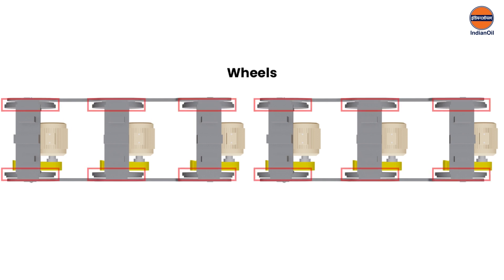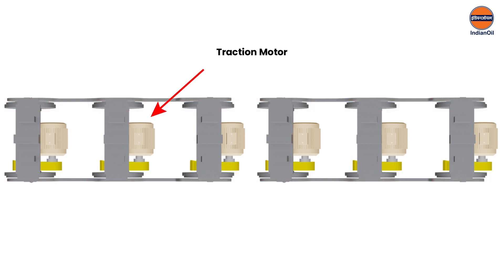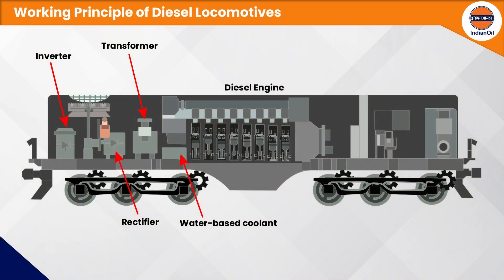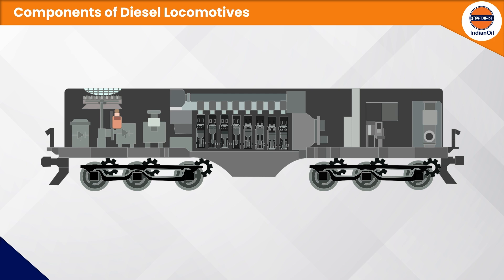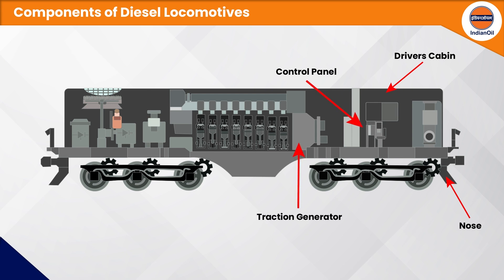The AC supply is fed to the traction motors. There are six traction motors, each connected to one axle which has two wheels attached to it. A water-based coolant keeps the engine from overheating, and a motor blower cools the transformer, rectifier, and inverter. The eight parts of a typical diesel locomotive comprise the nose, driver's cabin, control panel, traction generator, engine, engine room, compressor, radiator, truck bogey, and underframe.